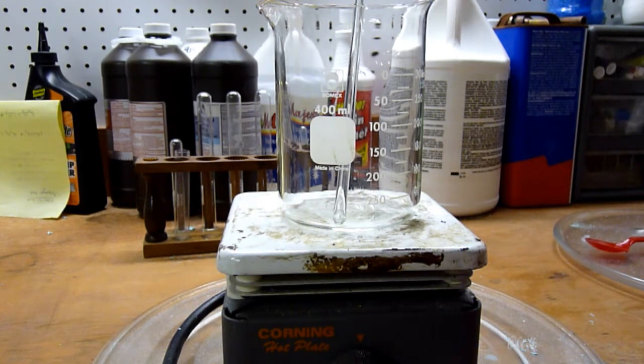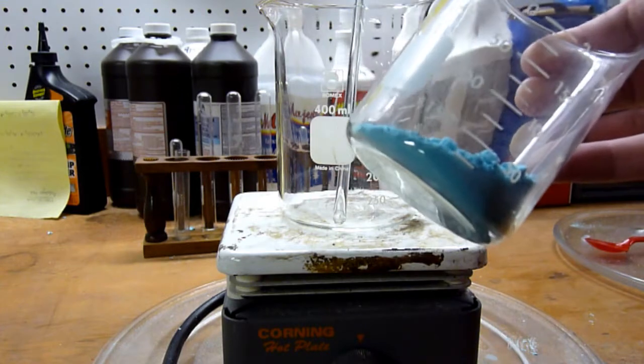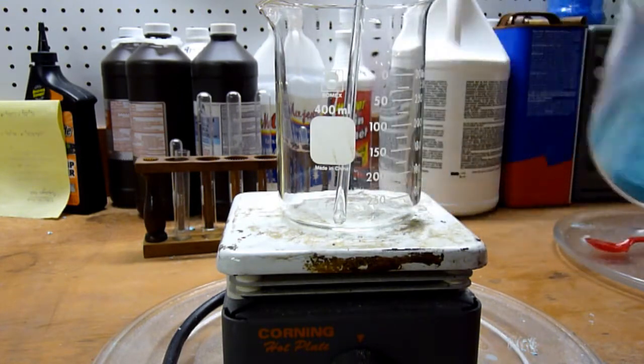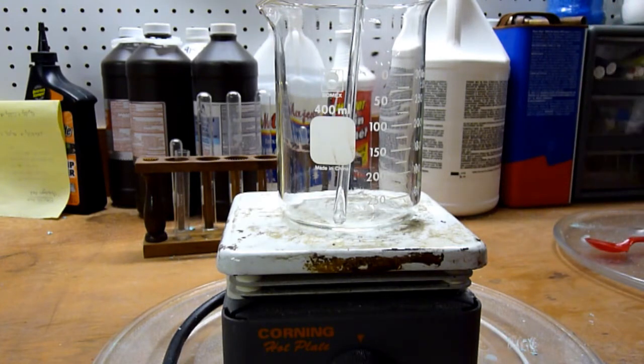So in this video we'll produce copper oxide by heating copper carbonate to over 290 degrees Celsius which is where it decomposes from the carbonate into the oxide with the evolution of carbon dioxide gas. So this will be cool because the color change will be very apparent.